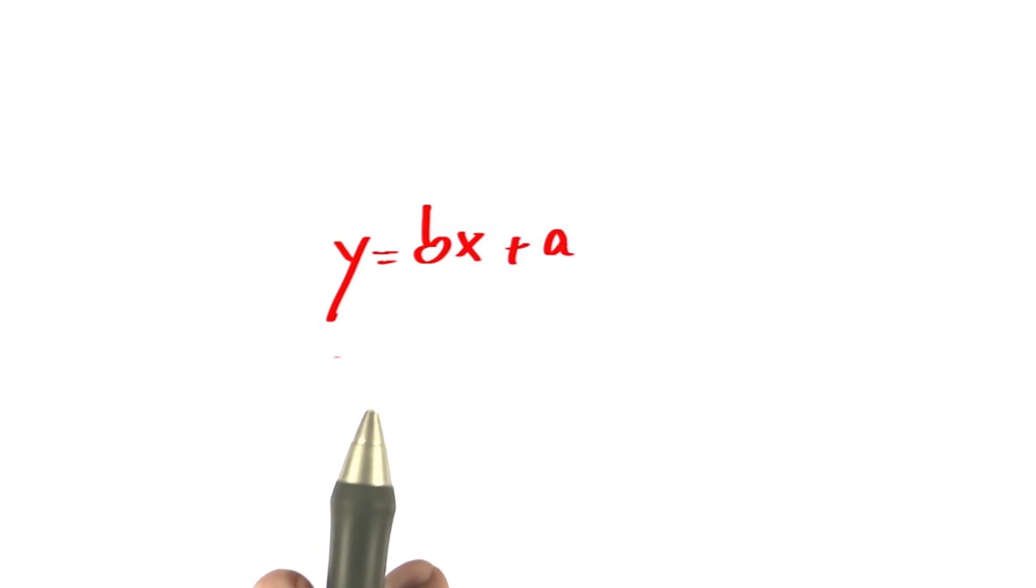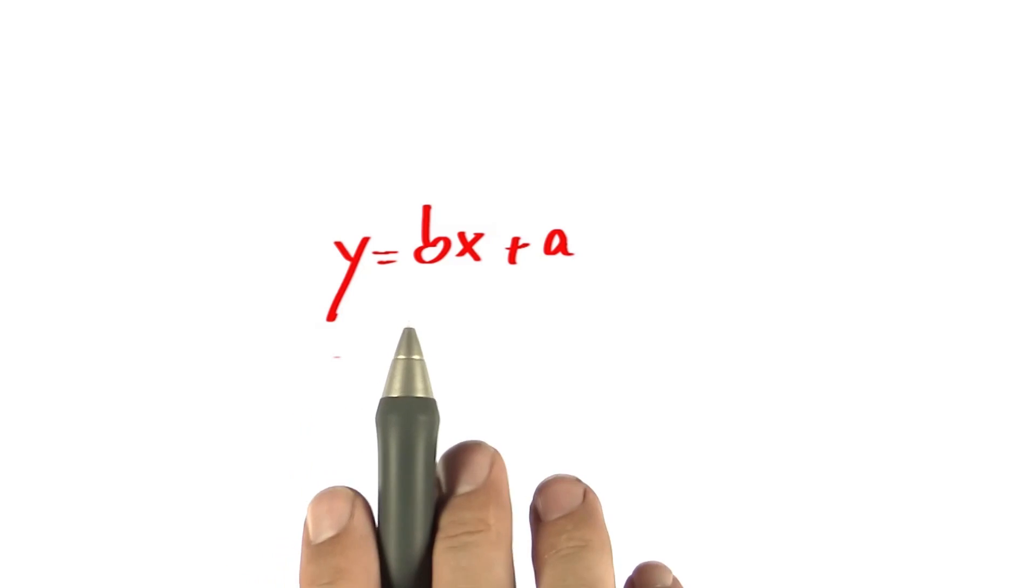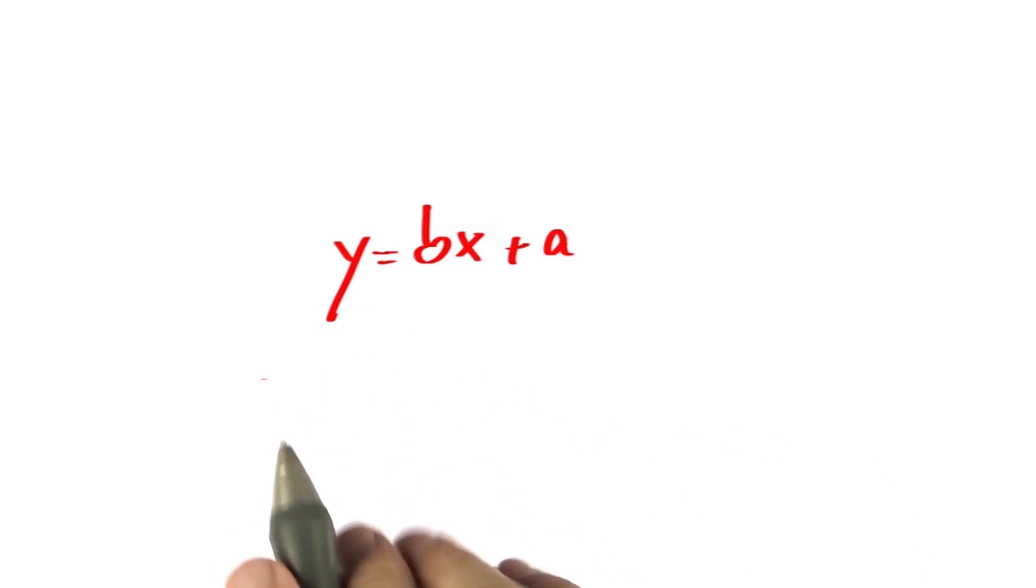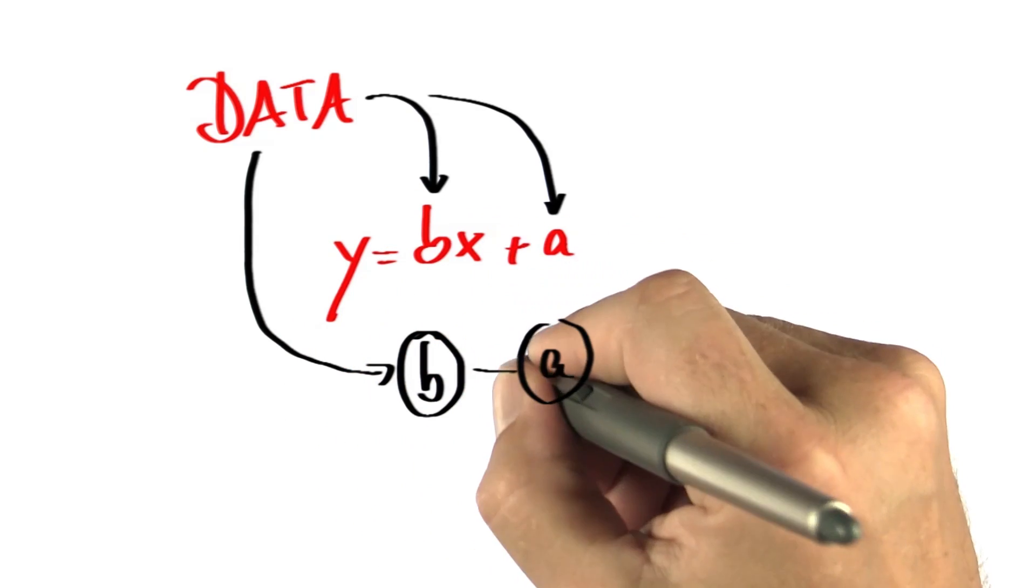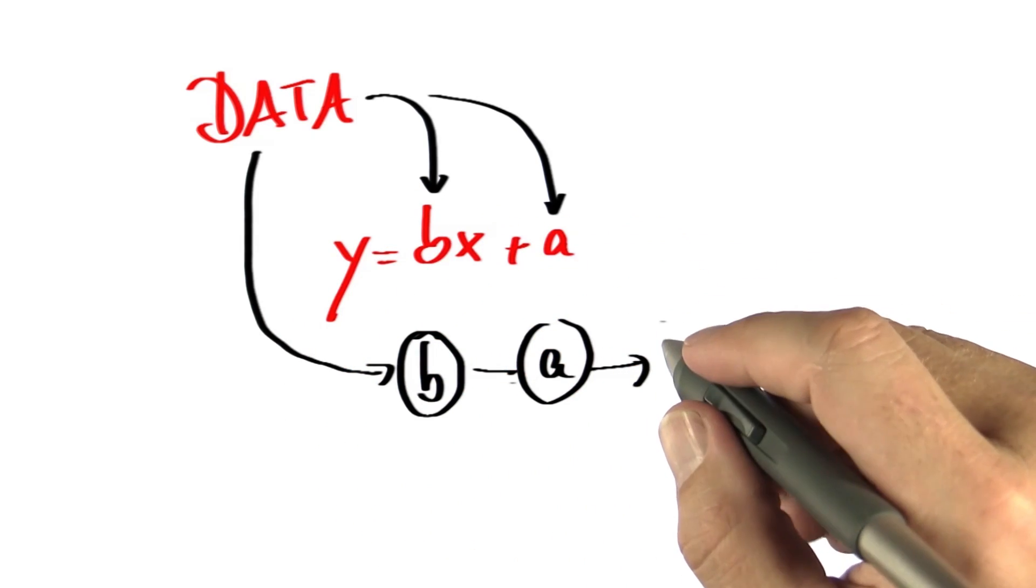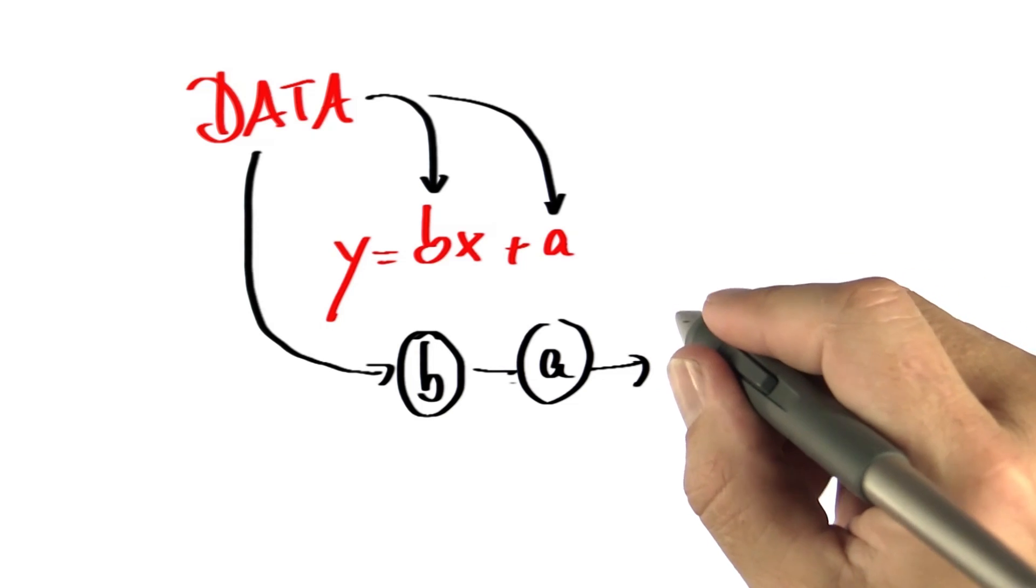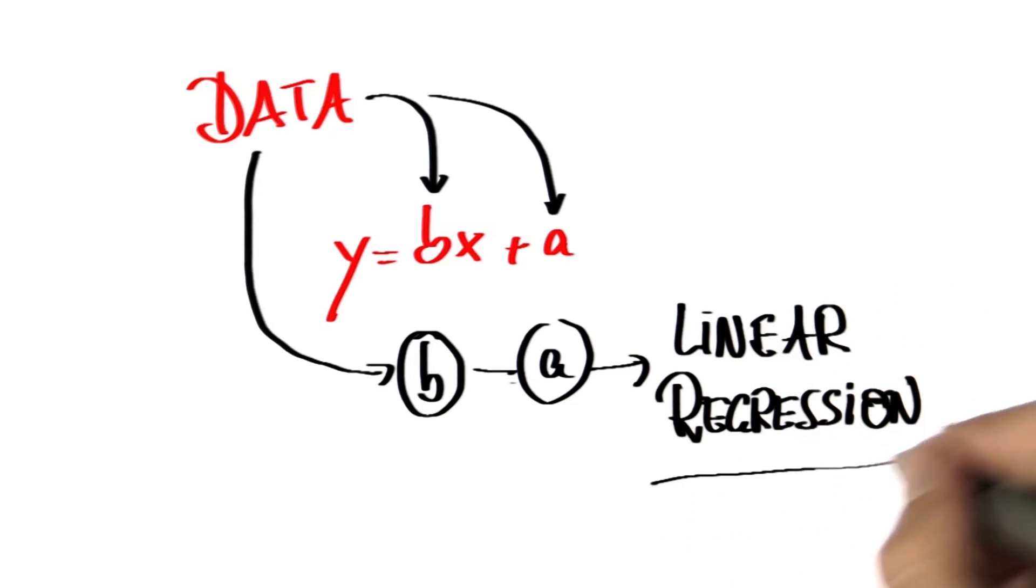y equals bx plus a. The key holy grail in linear regression and in much of statistics is how to use data to determine the value of b and the value of a. So if you can do this with data, then we solve the problem of fitting the best line, and that's once again called linear regression.